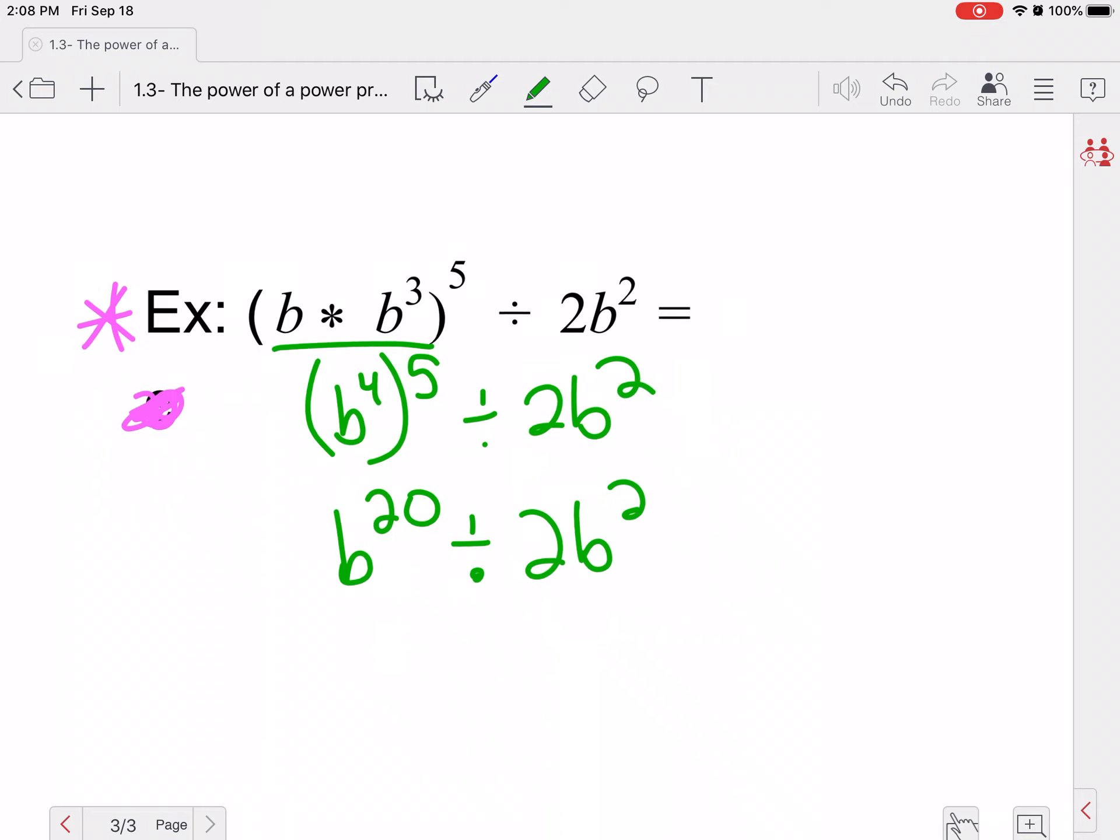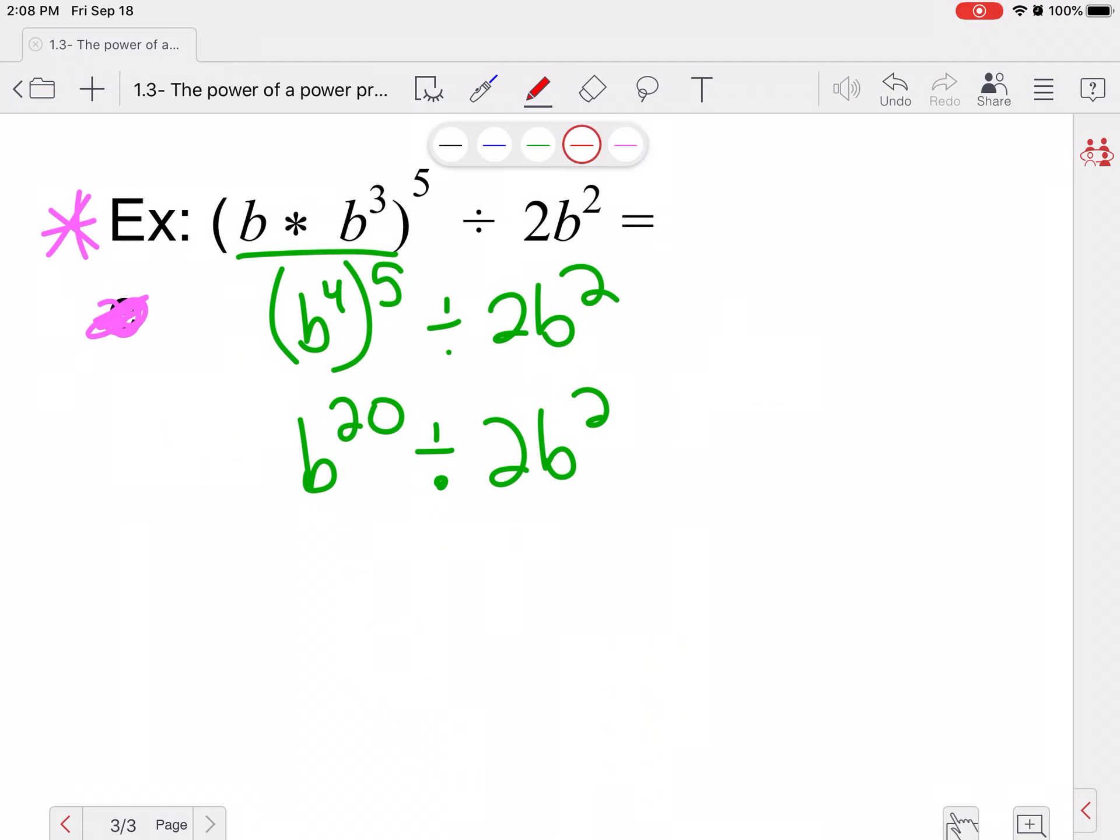Now I'm going to rewrite this one to make my life a little bit easier. So this is really B to the 20th all over two B squared. Now there's an invisible one in front here. So I can't reduce one half to anything. So I'm just going to leave it be, but I can reduce my B's. So I'm going to have one over two and B to the 20th over B squared becomes B to the 18th.